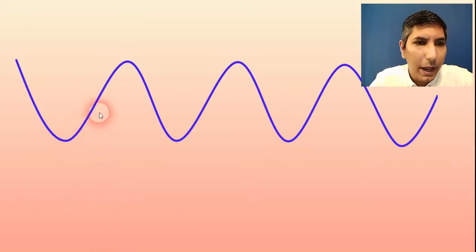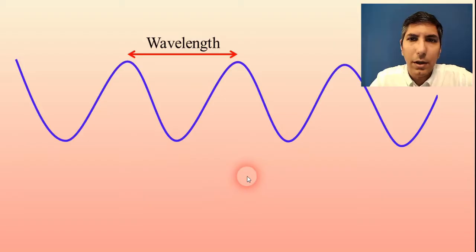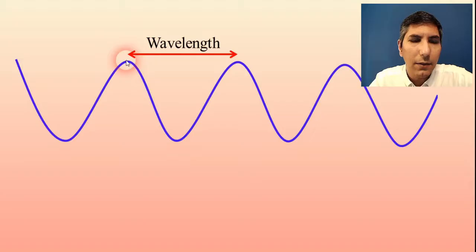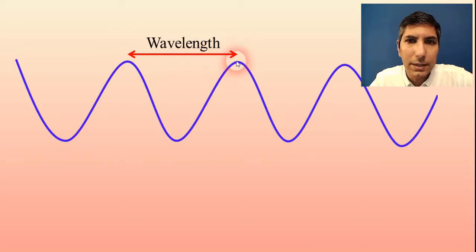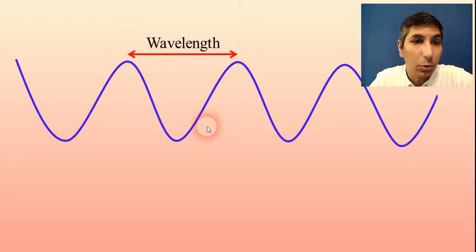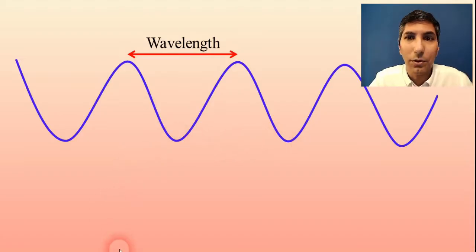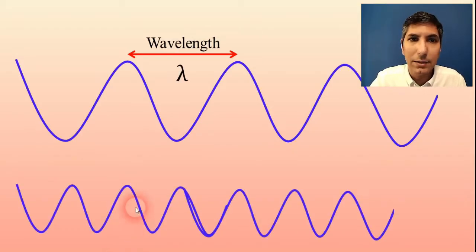Here we have a picture of a wave and we know that we can calculate the wavelength of the wave by literally taking the distance from one point on the wave and finding the distance to the exact same correlating point on the next wave. So in this case I'm going from crest to crest and that's the wavelength. Or you could go from trough to trough as well and get the exact same value. We usually measure wavelength in meters and the symbol for wavelength is the Greek letter lambda.